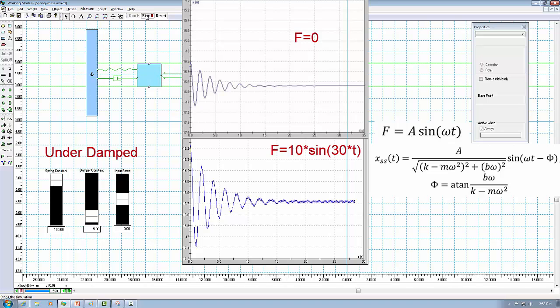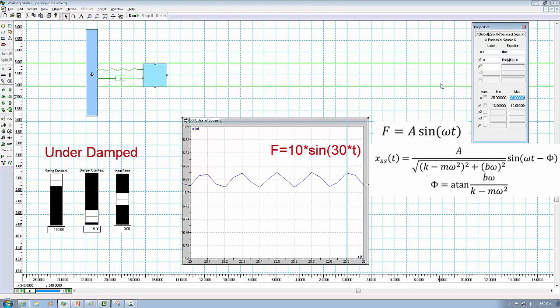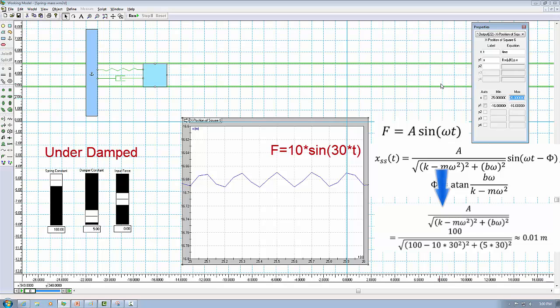After 25 seconds, the system comes to a steady state, but now there is still some small vibration. So let's zoom in to look at the steady state area. Now we zoomed in to after 25 seconds where the system comes to a steady state. The amplitude is really small. The peak to valley value is about 0.02, twice of our calculation.